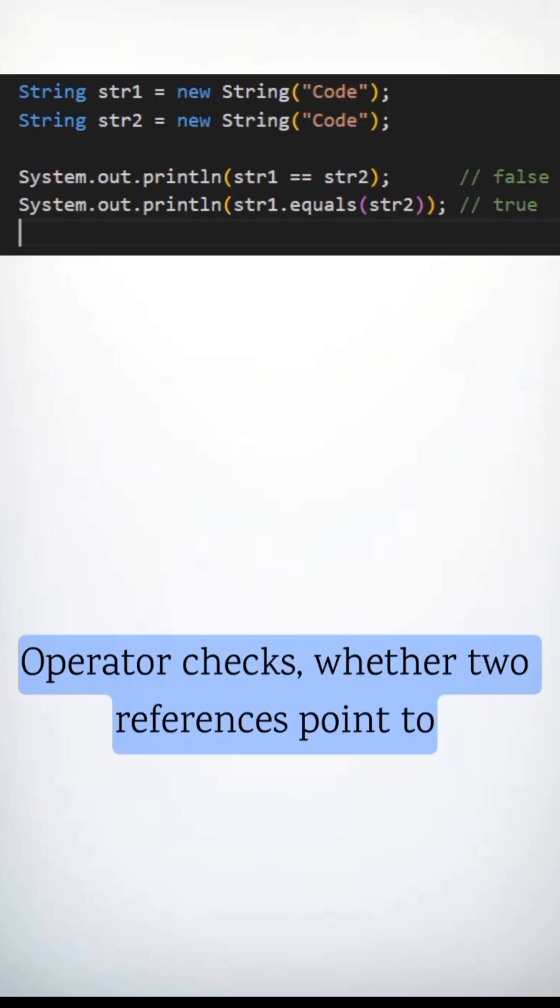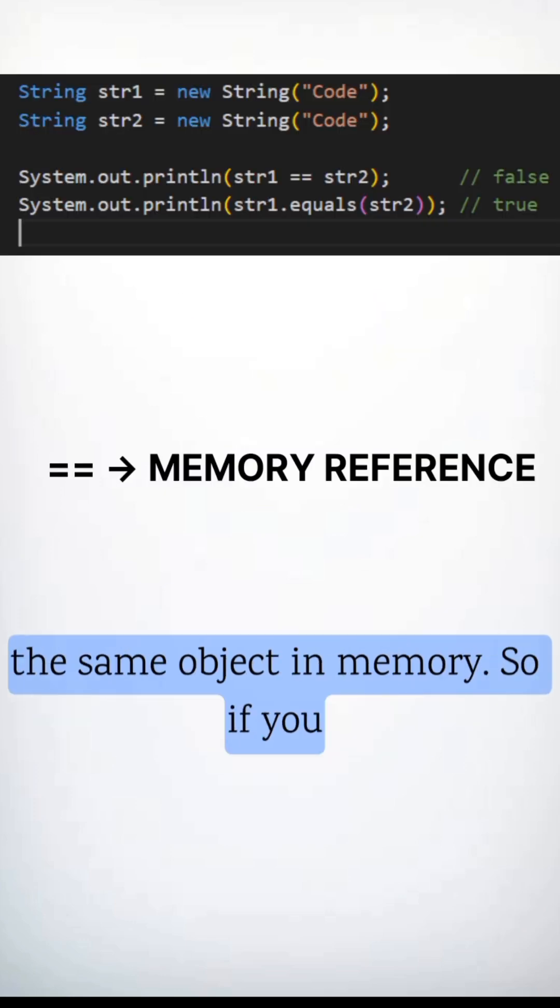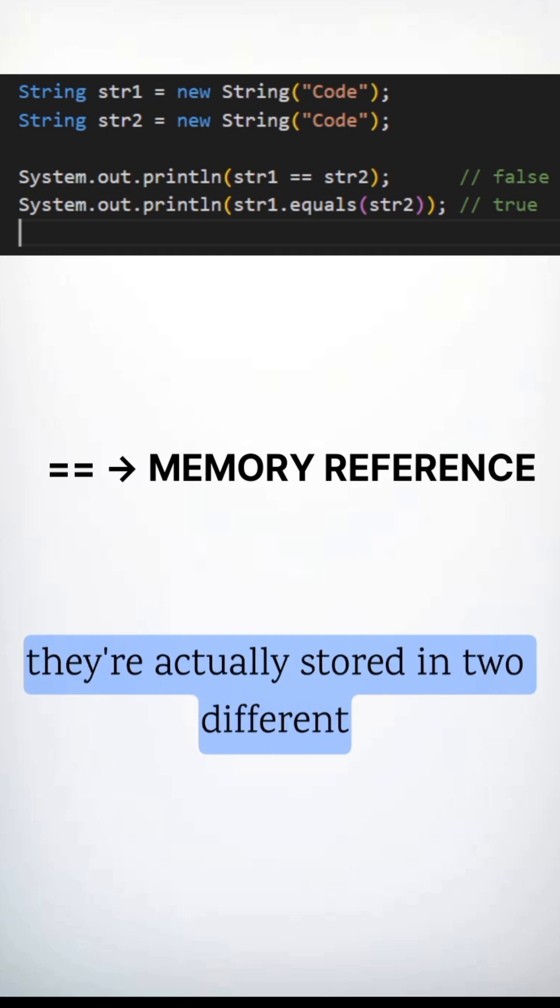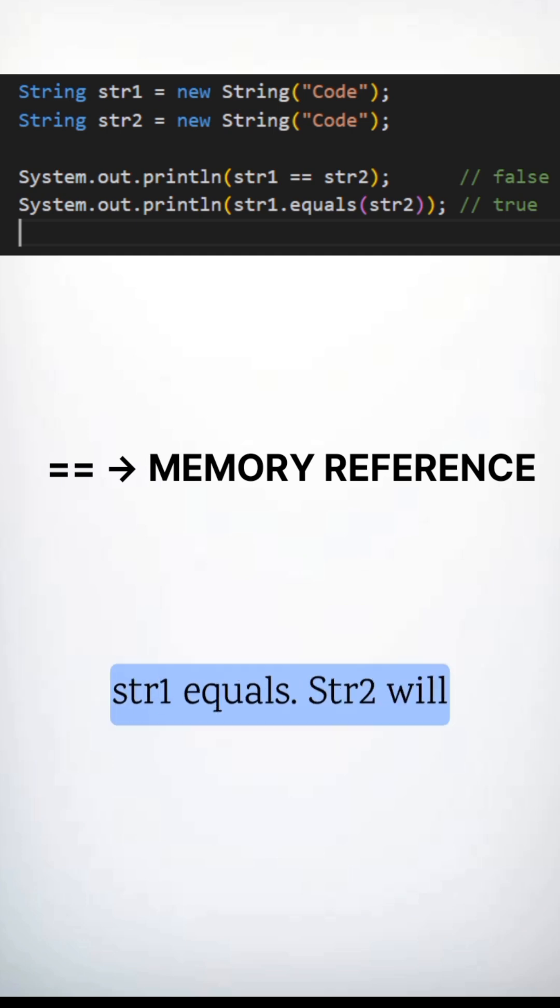The equals equals operator checks whether two references point to the same object in memory. So, if you create two strings using the new keyword, even if both contain the text code, they're actually stored in two different memory locations. That's why str1 equals equals str2 will return false.